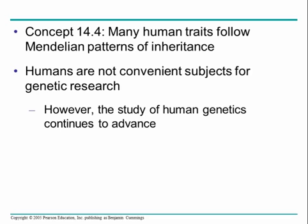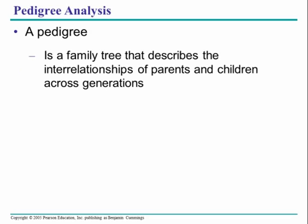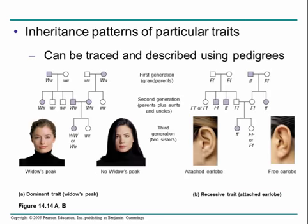Human genetics is very tricky to study because it's very difficult to manipulate humans or tell John I need you to go mate with Jane so that I can see what kind of offspring you have and take data on that. That's probably slightly awkward and immoral. So what we have to do is design and set up pedigrees using family histories or family trees between parents and children.